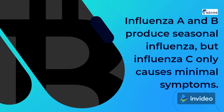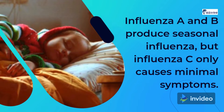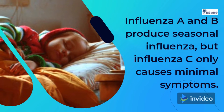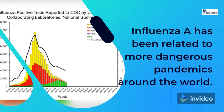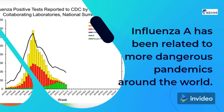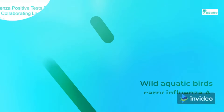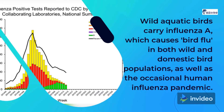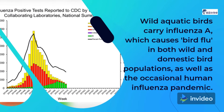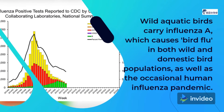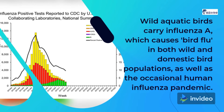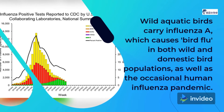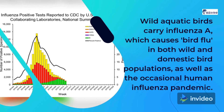Influenza A and B produce seasonal influenza, but Influenza C only causes minimal symptoms. Influenza A has been related to more dangerous pandemics around the world. Wild aquatic birds carry Influenza A, which causes bird flu in both wild and domestic bird populations, as well as the occasional human influenza pandemic.